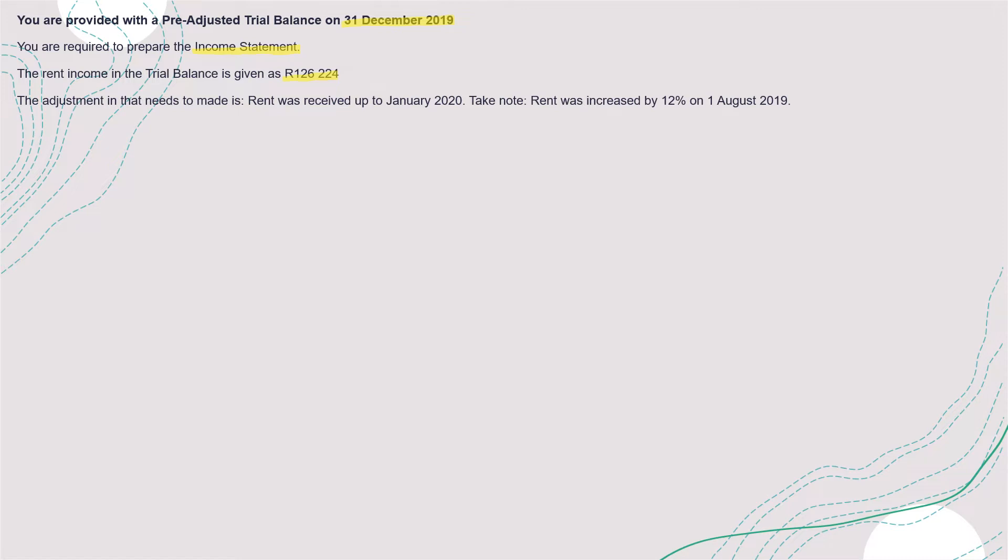Then the adjustment that needs to be made - rent was received up to January 2020. Take note rent was increased by 12% on 1 August 2019. The year is ending in 31 December, and rent income was received up to January 2020.